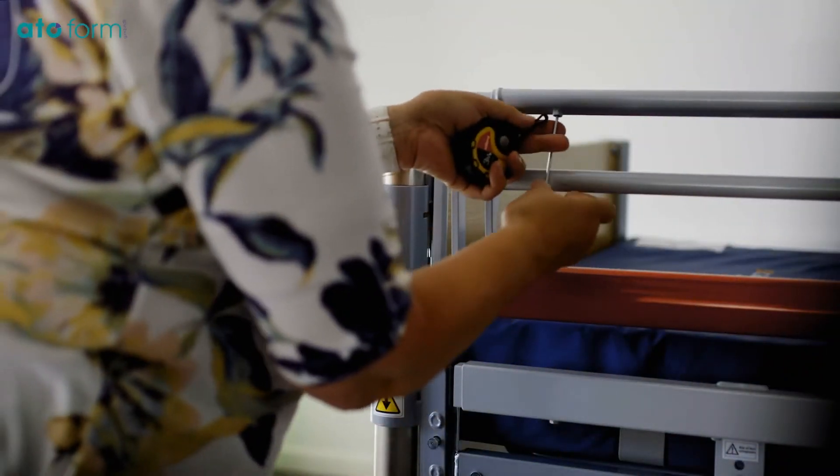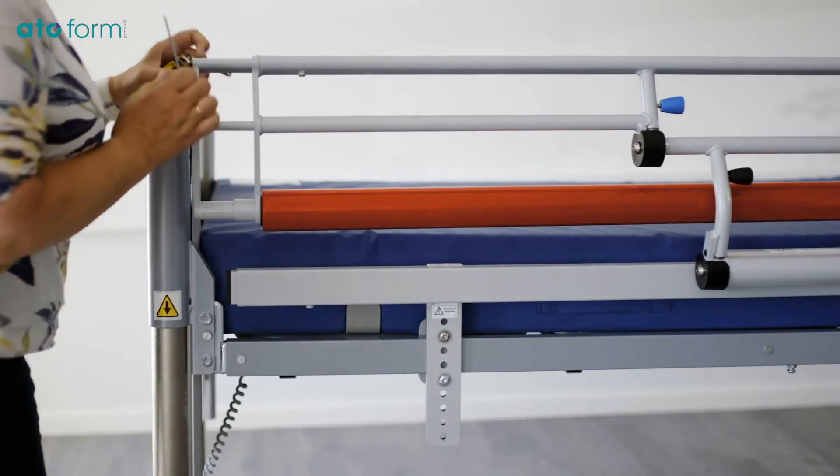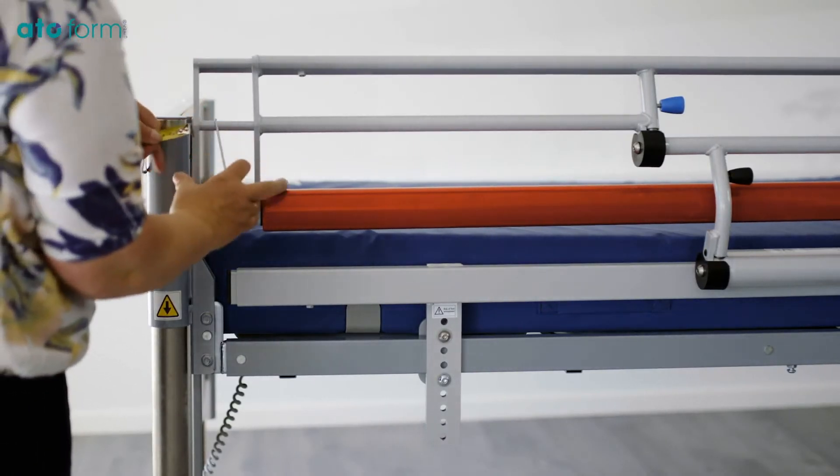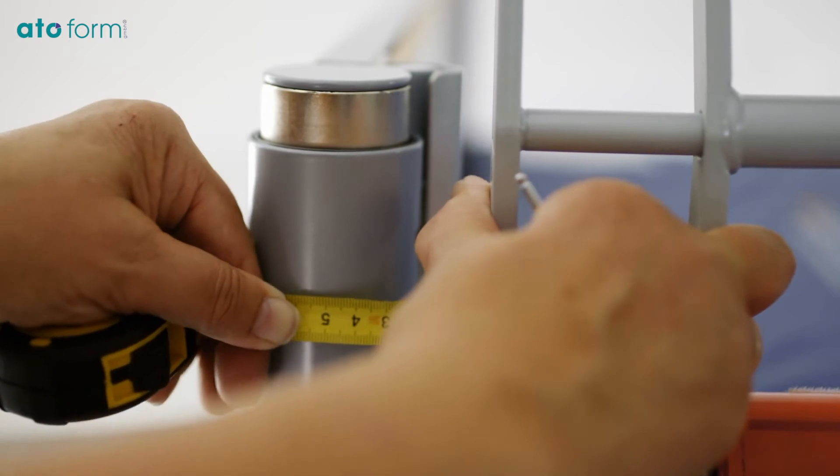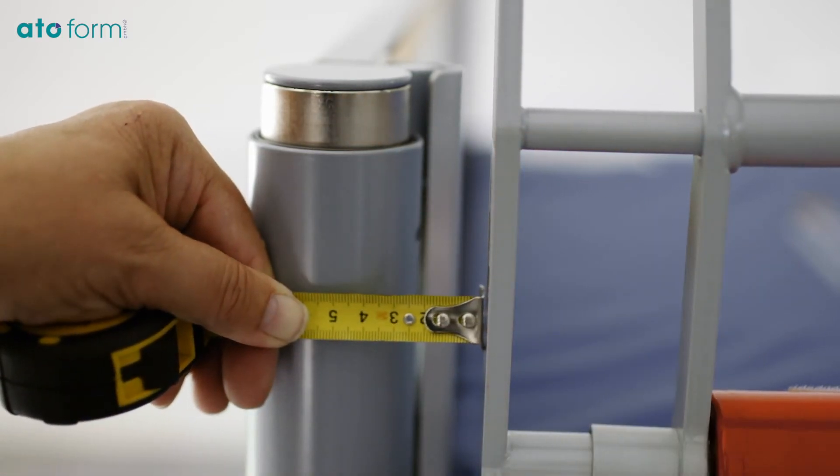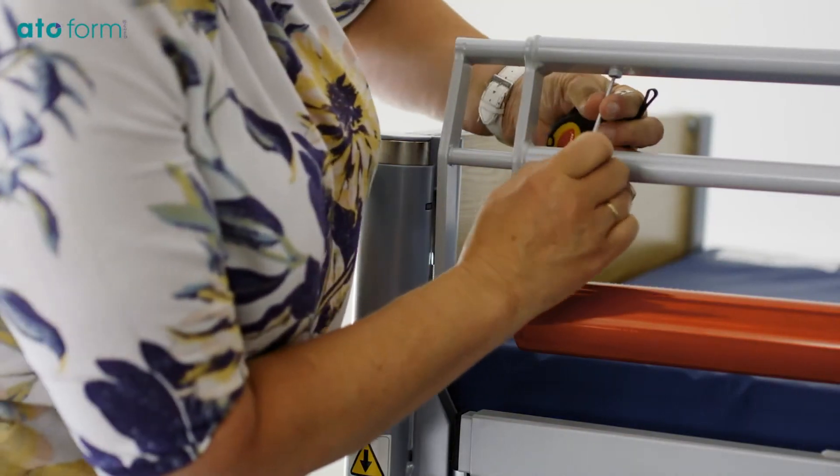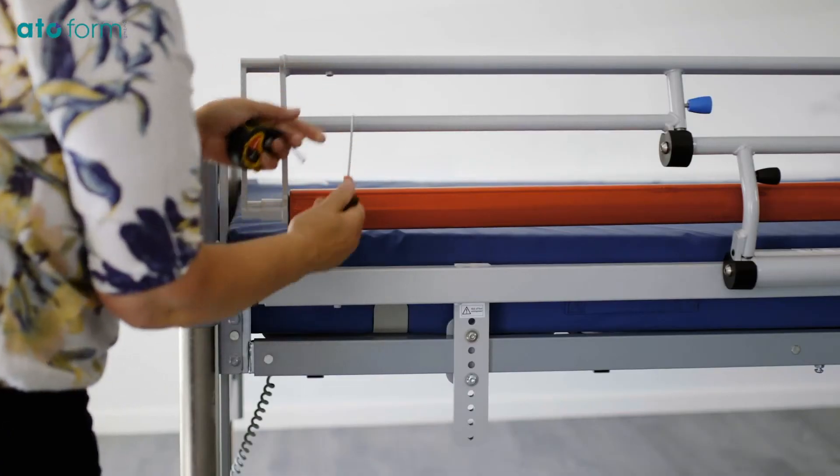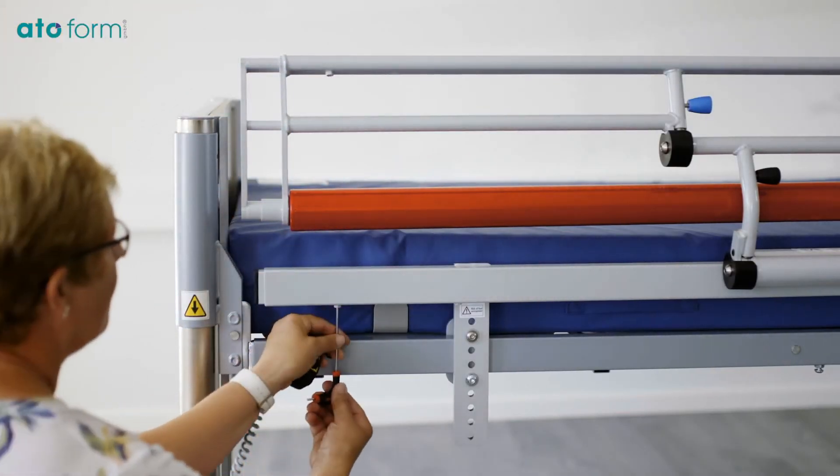Loosen the screws at the foot end of TURNADE with a 3mm Allen key, pull out the extensions so there is a 30mm gap to the foot end of the bed. Tighten the screw again. Do the same with the bottom extension.